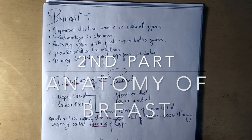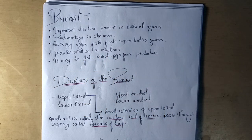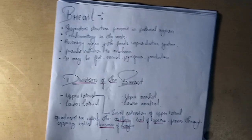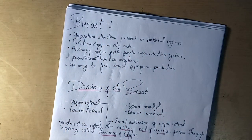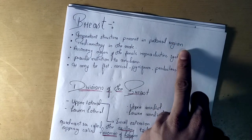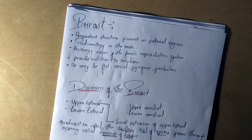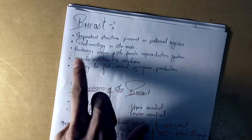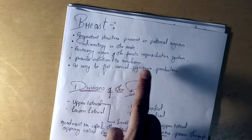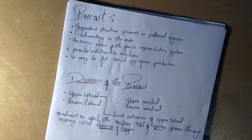Hello guys, welcome to Deep's Anatomy. In a previous video we covered the pectoral region, including the sternal notch and clavicle. Today I'm going to cover a part of the pectoral region called the breast. The breast is an important structure - rudimentary in males and fully developed in females. It is a mammary gland, an accessory organ of the female reproductive system, providing nutrition to the newborn.